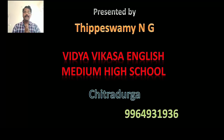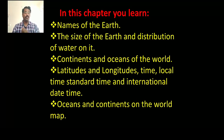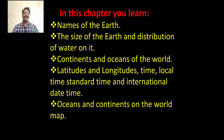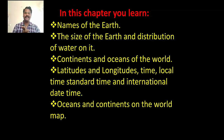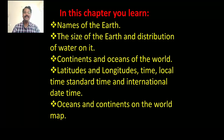What are the very important points we can get from the lesson, The Earth: Our Living Planet? The very important learning points from this lesson are: names of the earth, the size of the earth and distribution of water on it, continents and oceans of the world, latitudes and longitudes, time, local time, standard time and international date line, and oceans and continents on the world map.